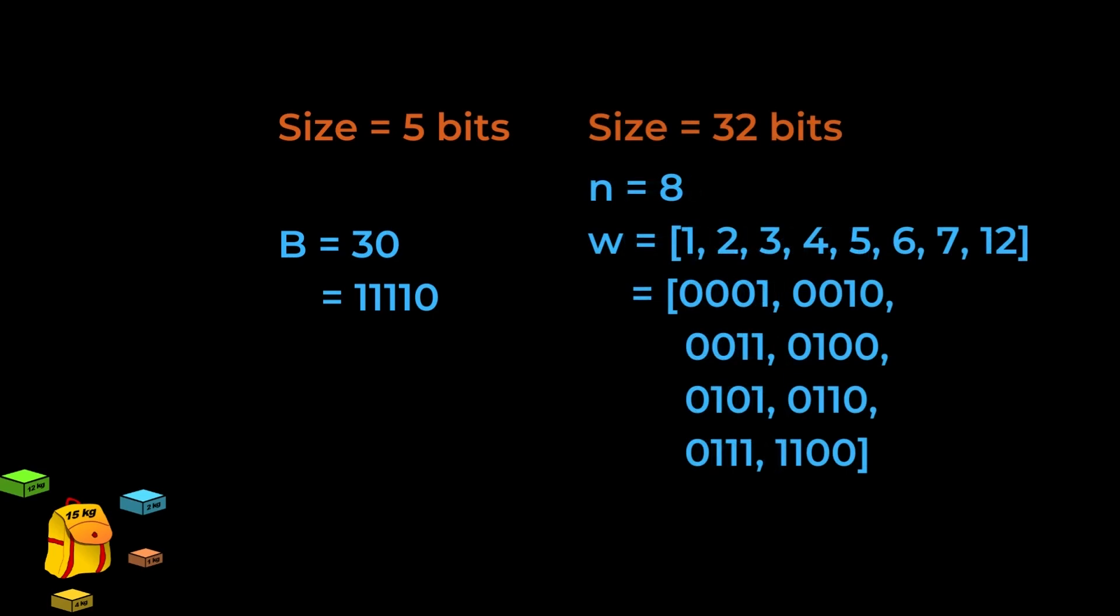With algorithms, we are used to working with arrays, and this is what we would typically see. B on the other hand is a bit problematic. As we intuitively saw earlier, doubling B from 15 to 30 would double its runtime, but the size of the input has only increased by one bit. This is why the knapsack algorithm is pseudopolynomial.